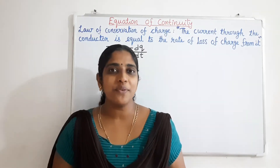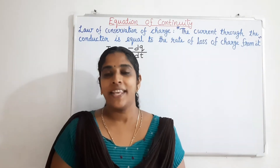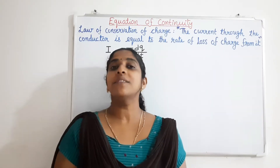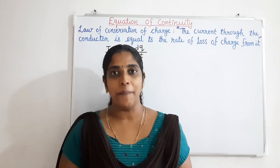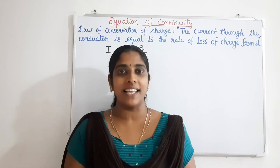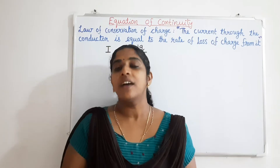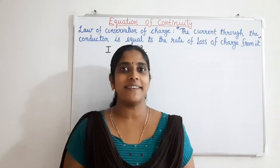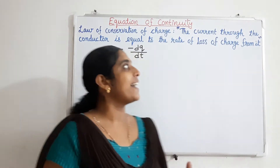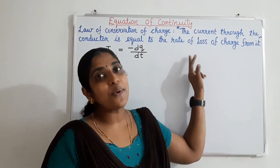Next, we can see the equation of continuity. The equation of continuity is based on the law of conservation of charge. In deriving this equation, we first state the law, then write it in mathematical form, express the physical quantities as integrals, and then use Stokes theorem or divergence theorem to reach the final result. The law of conservation of charge states that the current through a conductor is equal to the rate of loss of charge from it.